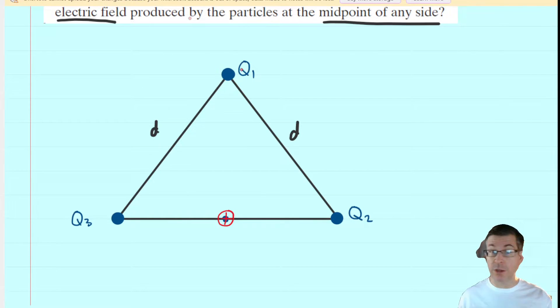Well, remember Q1 is also positive. So if Q1 is positive and the test charge is positive, then they're going to repel one another. So Q1 would actually repel this test charge and push it away from Q1. And this would be the direction of the electric field produced by Q1. So we would label that E1.